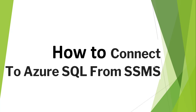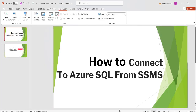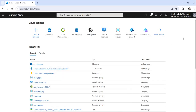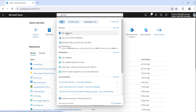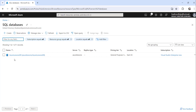I will navigate to the Azure portal where I have already logged in, and I will show you the Azure SQL Database that I have already created, which I am going to connect from my SSMS. Here, what you need to do is search for SQL Databases and click on the search result. You can see here I have one Azure SQL Database already created — that is Azure Lessons DB.